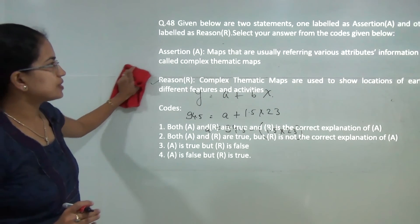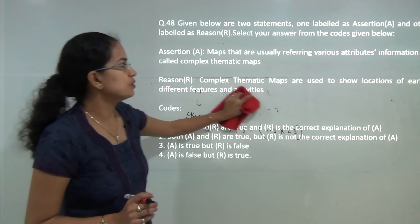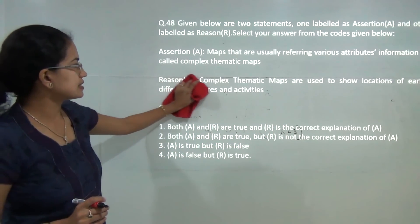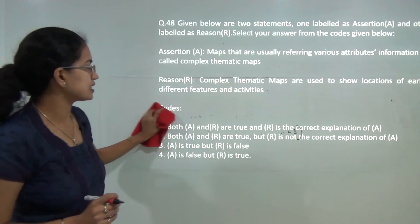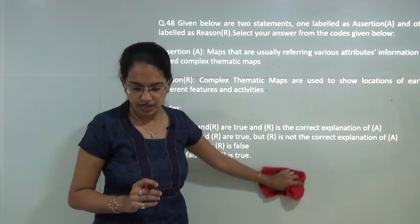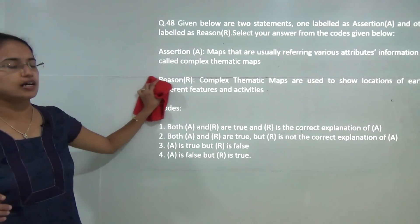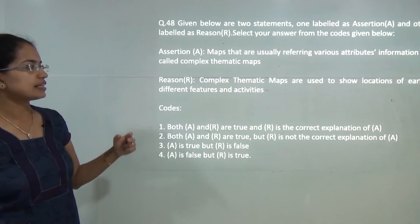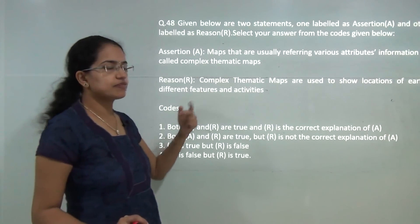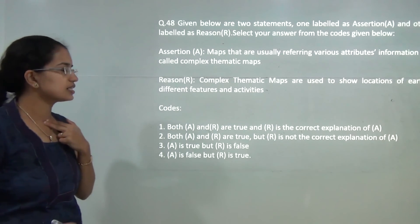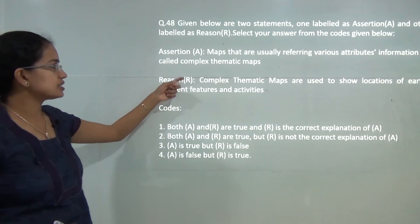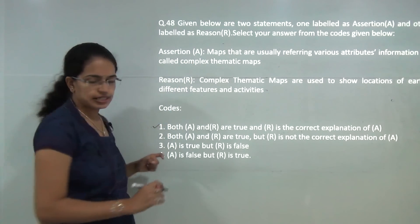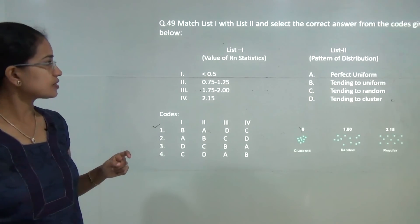Maps that refer to various attribute information are called complex thematic maps. Thematic maps talk about specific characteristics giving specific information about something and show the location of earth's different features and activities. The reason correctly explains the assertion, so option 1 is the correct answer.